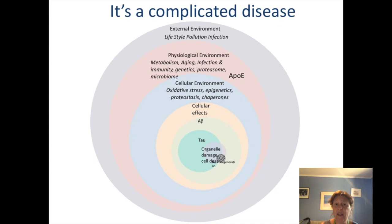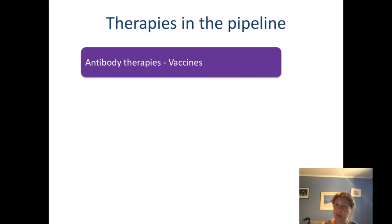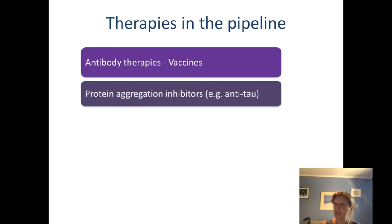Now I want to move on to thinking about therapies — what is it that we can be doing to try and cope with this disease? There are a number of therapies in the pipeline. You may have heard about antibody therapies — essentially like vaccines, being developed against those pathological proteins to try to stop the development of those structures and remove them from our brain tissue. There are also protein aggregation inhibitors: small molecules that bind to the proteins and stop them from aggregating, which seems quite encouraging at the moment.